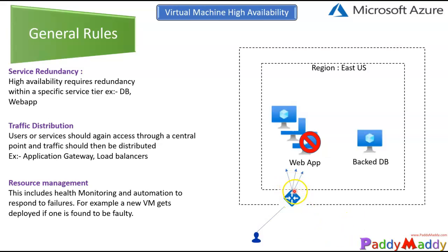You can distribute traffic by using Application Gateway or Load Balancer to other virtual machines in the backend which have similar web apps or mirrored virtual machines — you can use scale sets for that. The final component is resource management, which includes monitoring the complete health of the virtual machine: what went wrong, why it's not responding, CPU spikes, disk access, or high networking. You can find all this out using monitoring solutions within Microsoft Azure.